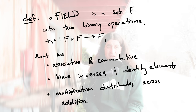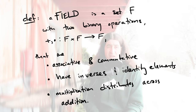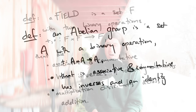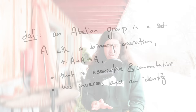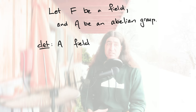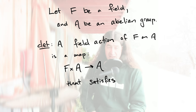So let's unpack that definition a little bit. A field, you might recall, is a set with two operations — addition and multiplication — and they're really well behaved: they're associative, commutative, and they distribute amongst each other. They have inverses and identity elements. An abelian group is just a set that has one of those operations.